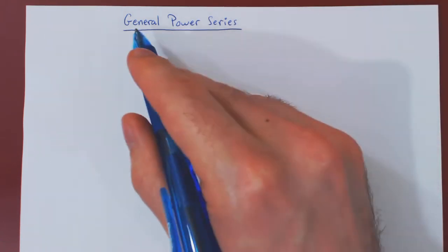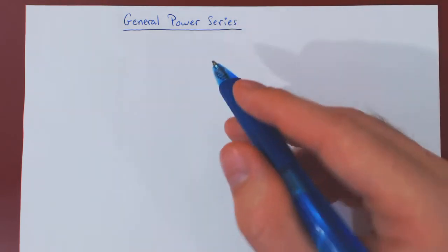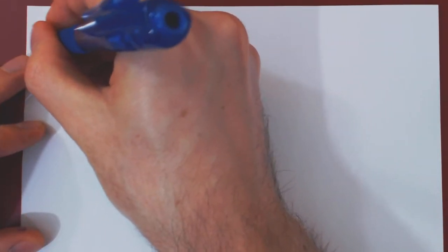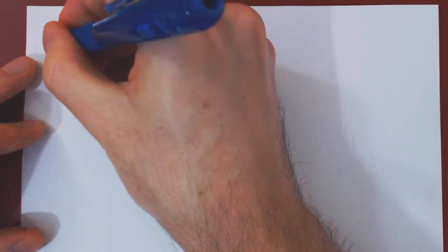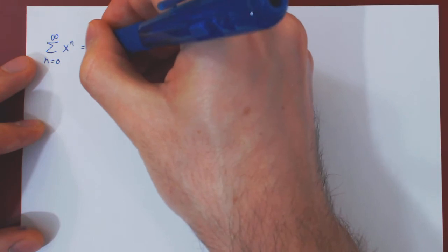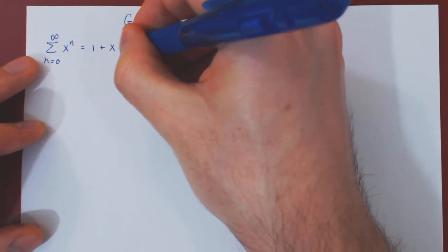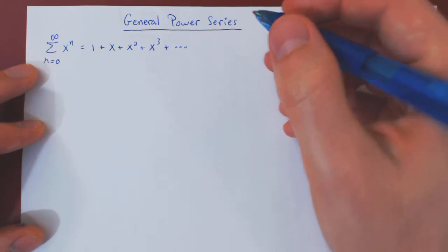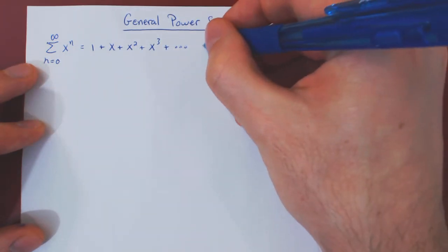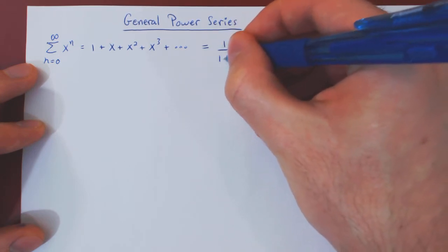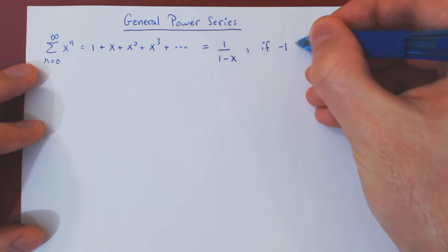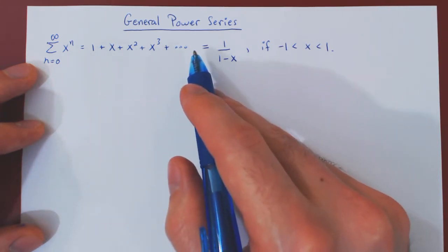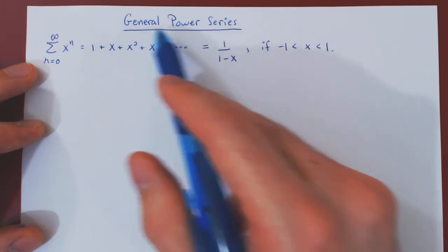In this video, we will discuss general power series. Recall that in the previous video, we looked at a very special and simple example of a power series — namely, the series from 0 to infinity of x to the n, which, if we expand out, returns 1 plus x plus x squared plus x cubed and so forth. This special power series converges to the simple rational function 1 over 1 minus x on the open interval from negative 1 to 1. But this is a very special case. How do we construct, in general, any power series?